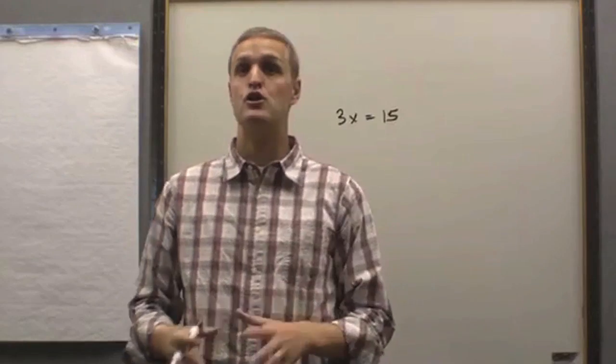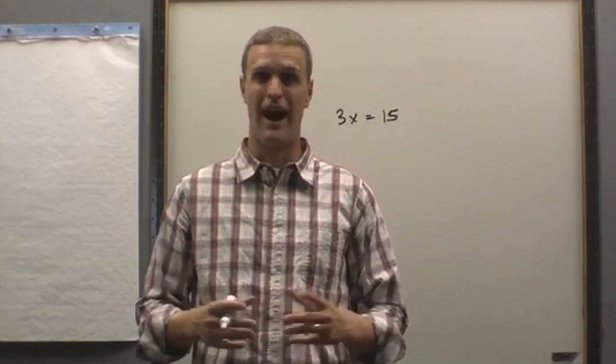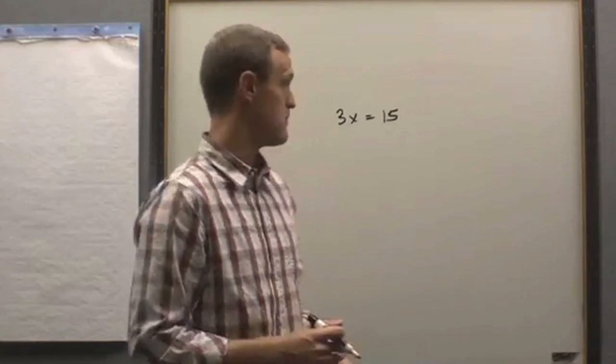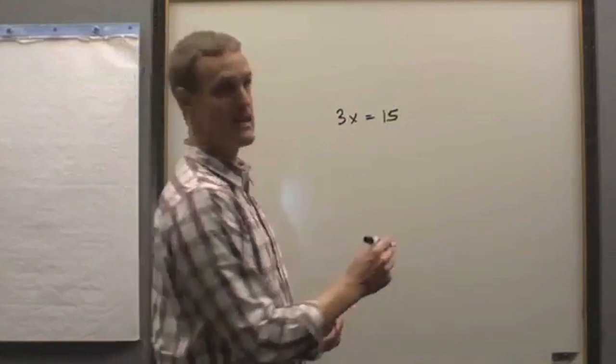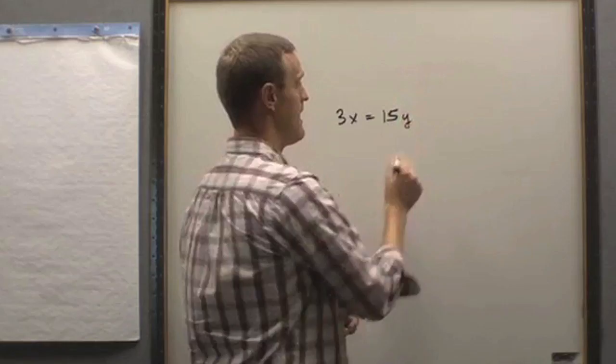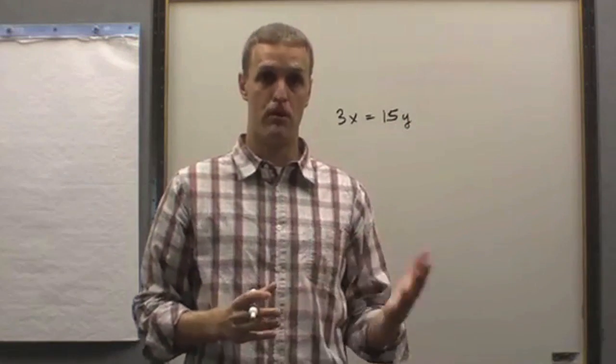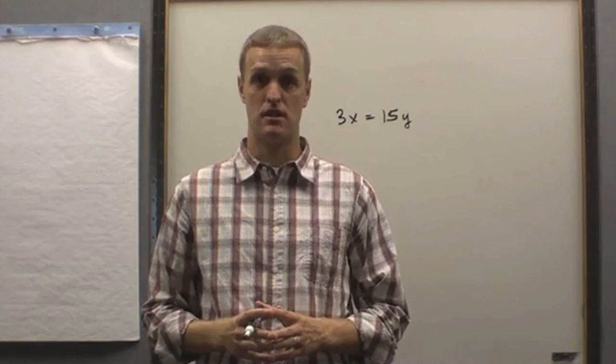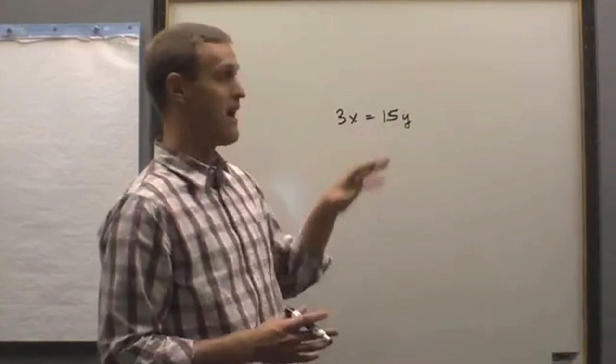If I have two variables to solve for, I must have at least two equations to solve for those two variables. I can't say 3x equals 15, y and somehow be able to figure out what both x and y are. There's an infinite number of combinations of x and y that would satisfy that equation.